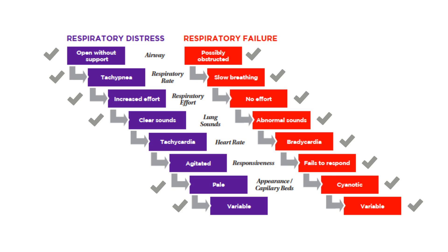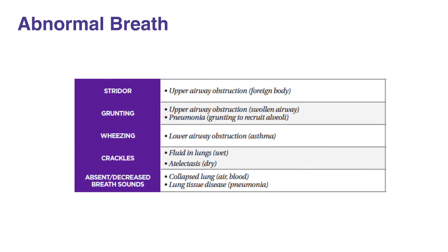In some instances, breath sounds can provide information about the source of the breathing problem. Abnormal breath sounds include stridor, grunting, wheezing, crackles, and absent or decreased breath sounds. For information on the source of breathing problems associated with each breath sound, consult Table 11 in your corresponding PALS manual.